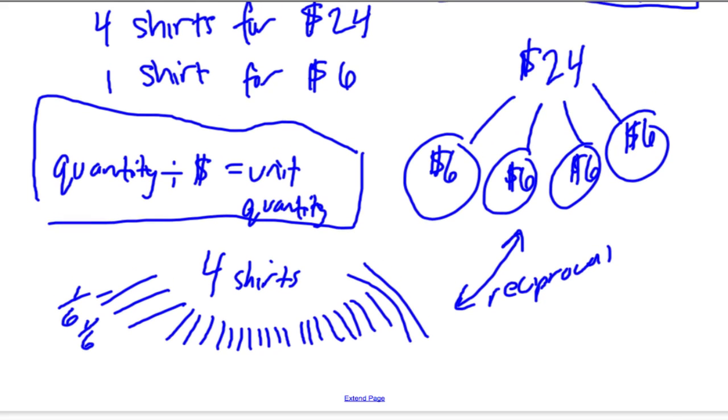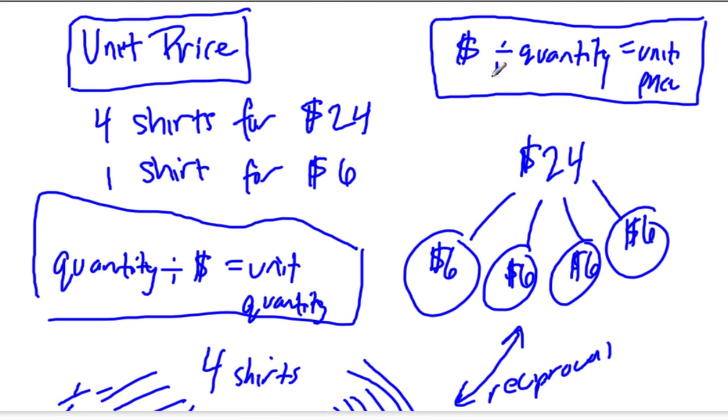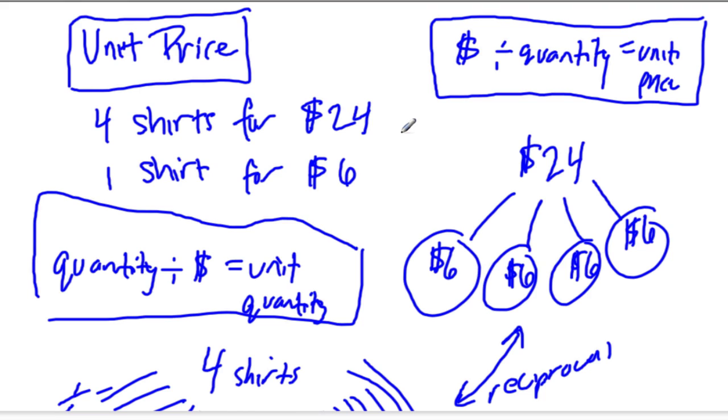So those are two quick formulas to deal with unit price and unit quantity. When you compare different unit prices, it's very important to determine which you're using. They will tell you different things. Like, for example, unit price, a better deal will be a lower number. However, unit quantity, you want to get more for your money. So if you use this, you want to compare and find the one that gives you the highest number, the most for your money. This will give you the least amount of money you're spending.